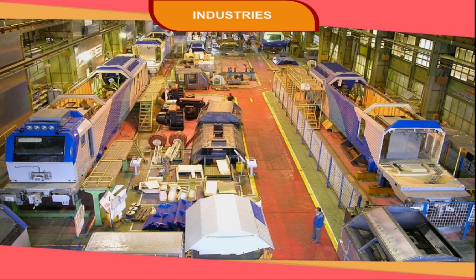The railway equipment industry manufactures locomotives powered with steam, diesel, or electricity, and rolling stock which includes coaches, wagons, oil tankers, etc. In USA, the main centers of railway equipment are Detroit, Chicago, Philadelphia, and New York. In UK, the main centers are Glasgow, Derby, and Manchester.